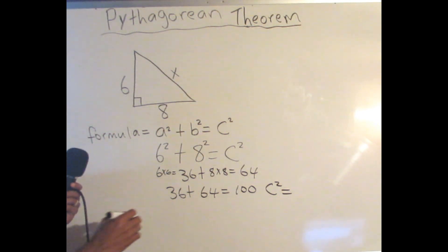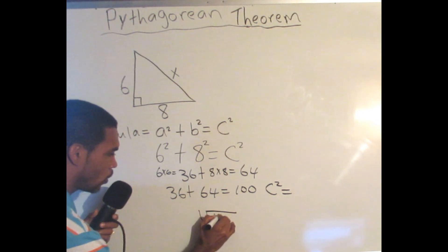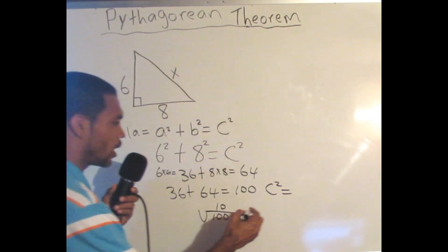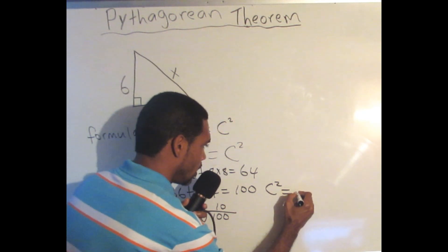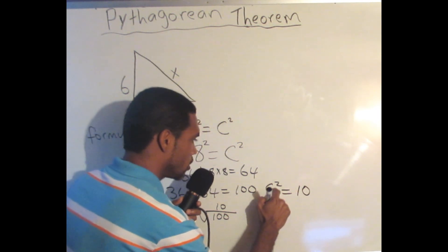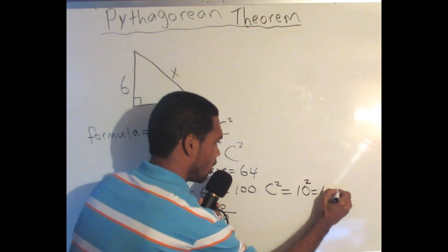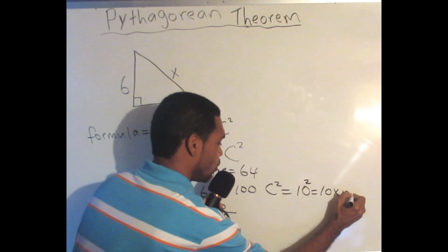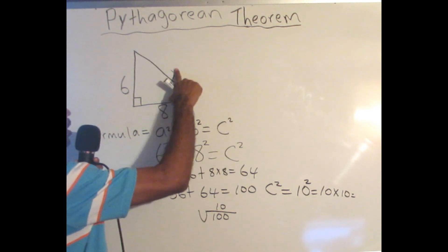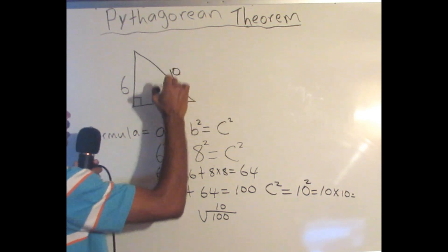Remember from our recent exponent video: 6 squared is not 6 times 2 — it's 6 times 6, which equals 36. And 8 squared is not 8 times 2 — it's 8 times 8, which equals 64. So 36 + 64 = 100. We then take the square root of 100, which gives us 10, so we erase the question mark and write that x = 10.